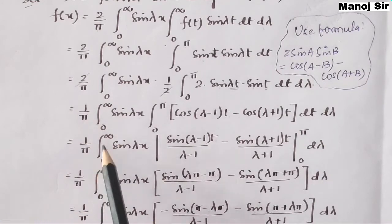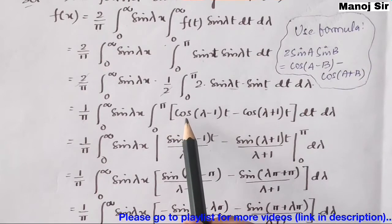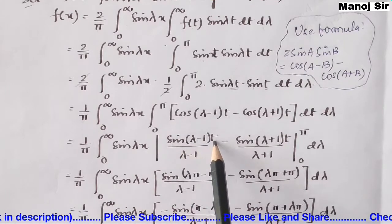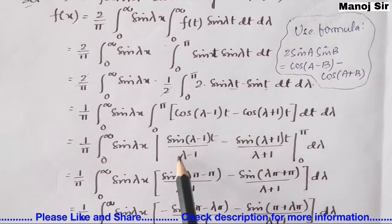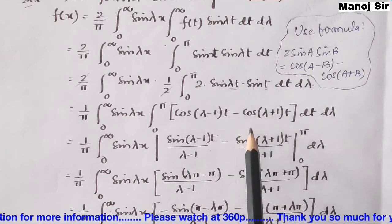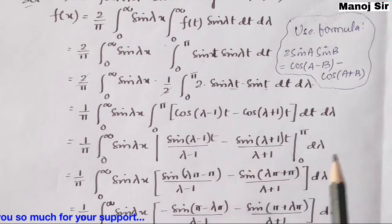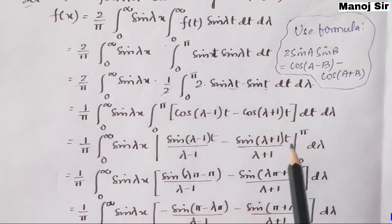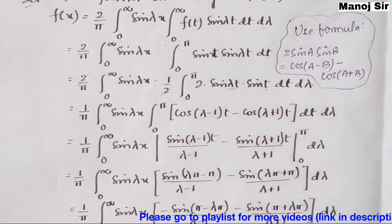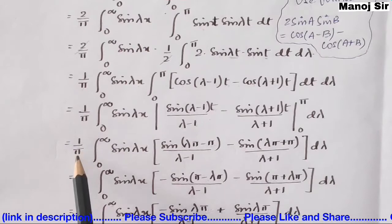Now integrating: (1/π) ∫₀^∞ sin(λx) [sin(λ − 1)t / (λ − 1) − sin(λ + 1)t / (λ + 1)] from 0 to π dλ. The integration of cos gives sin divided by the coefficient of t.